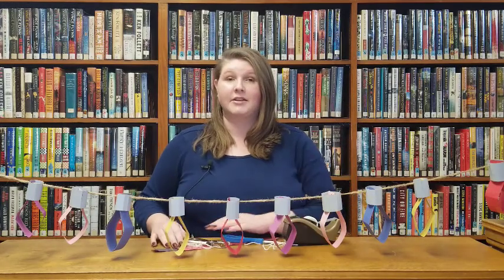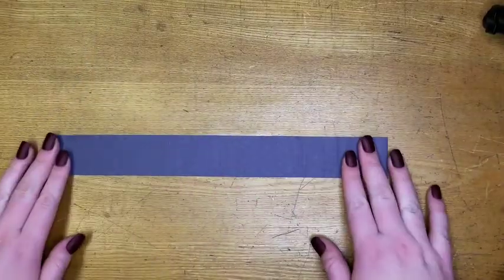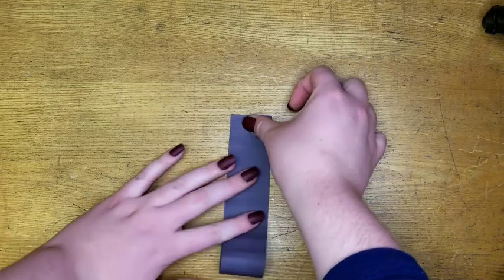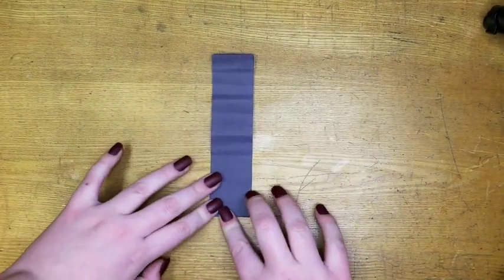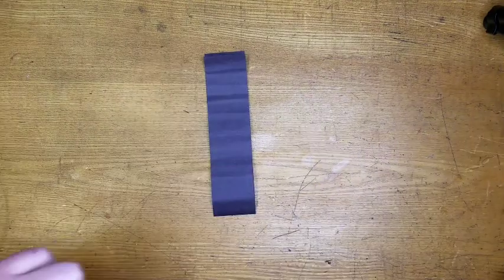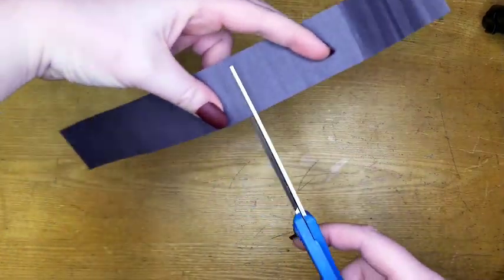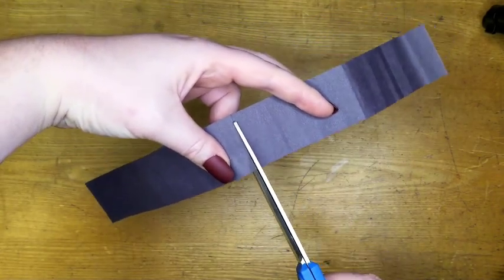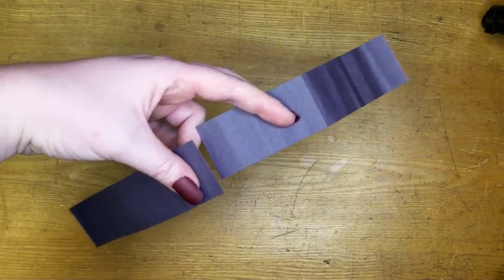To get started, grab your black pieces of paper. Take your black strip of construction paper and fold it in half. Now using scissors, cut the strip in half at the fold. Set aside one half for use later.